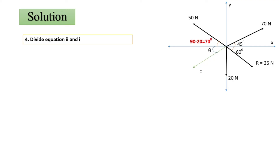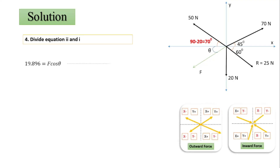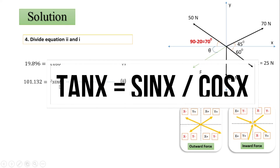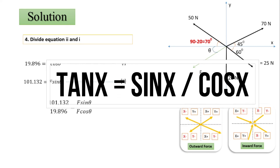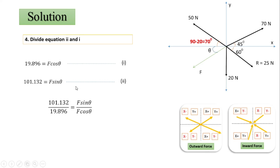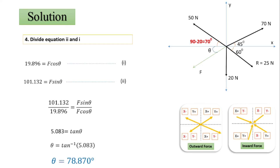To find θ, we divide Equation 2 by Equation 1. Equation 2 has F·sinθ and Equation 1 has F·cosθ, so F cancels and sinθ/cosθ becomes tanθ. Therefore tanθ equals 101.132 divided by 19.896, which gives 5.083. Taking the inverse tangent, θ equals tan⁻¹(5.083), so θ equals 78.87 degrees.